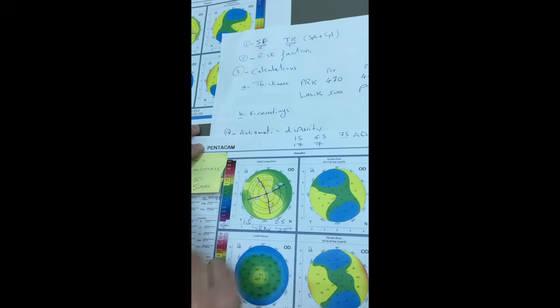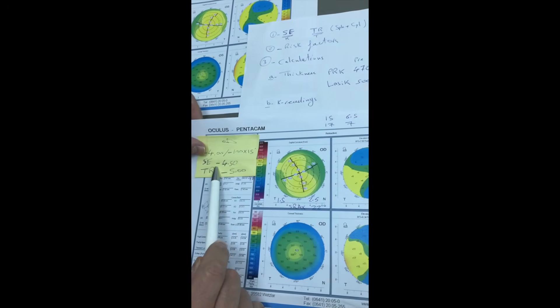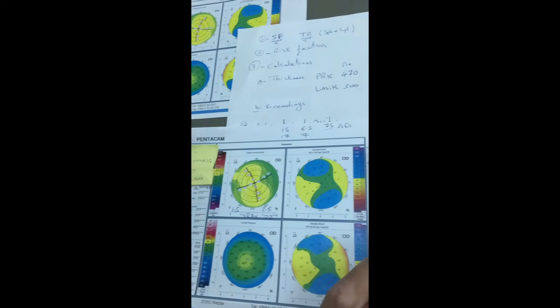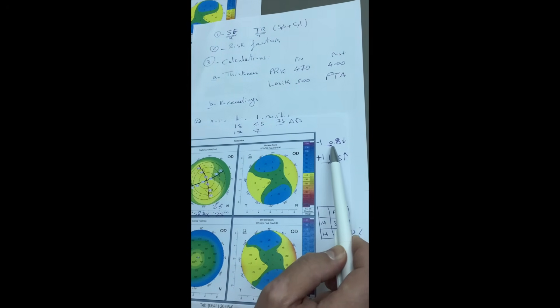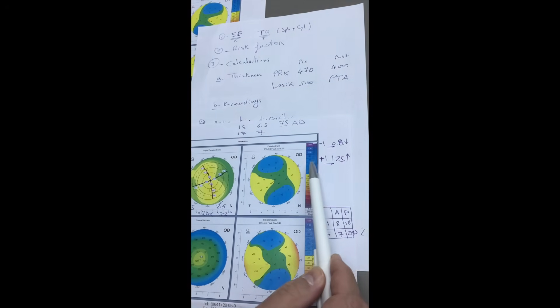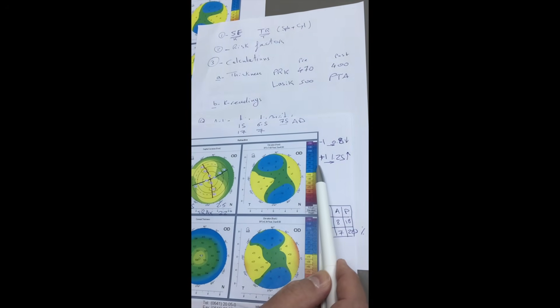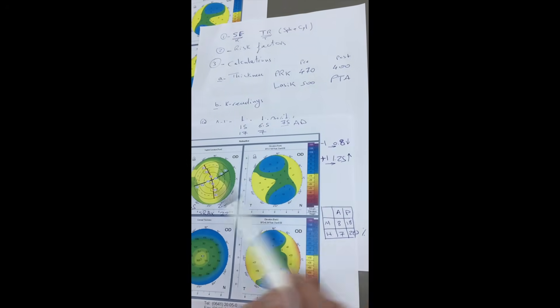For the K readings, we use the spherical equivalent. The spherical equivalent is minus 4.5 diopters. For each minus one diopter ablation, the K readings will be reduced by 0.8 diopters. And each plus one diopter of hypermetropic correction will increase the K readings by plus 1.25.